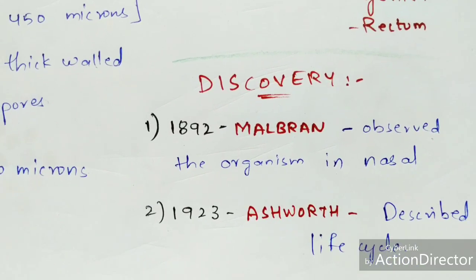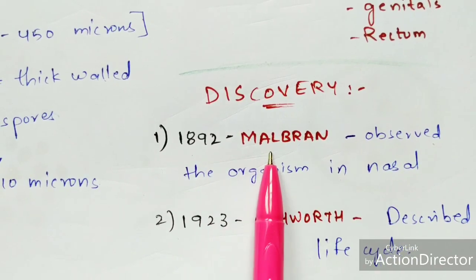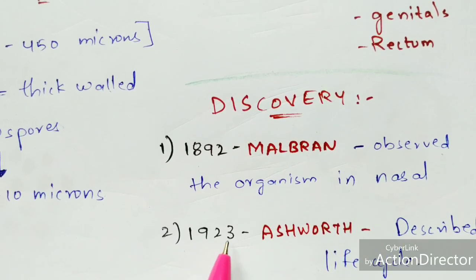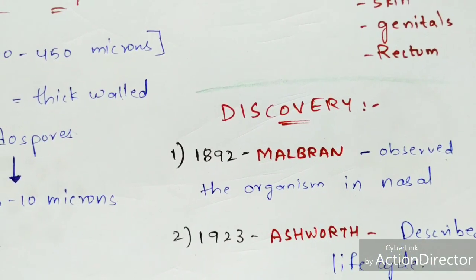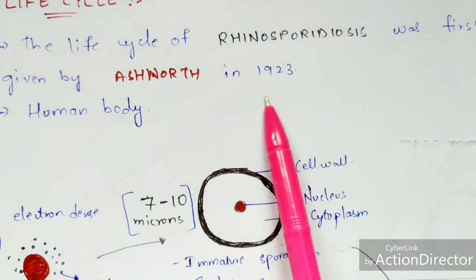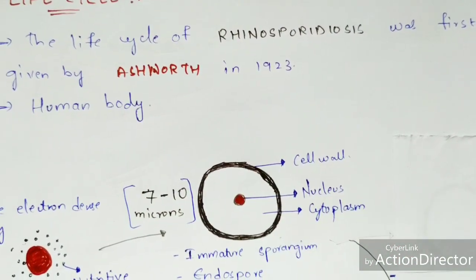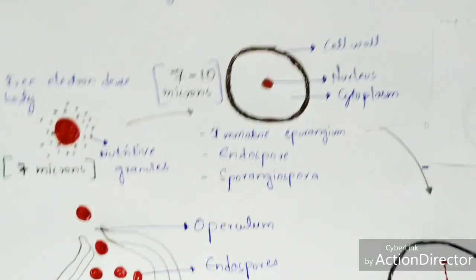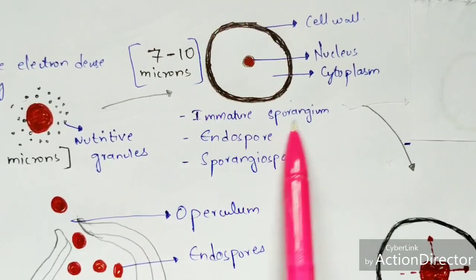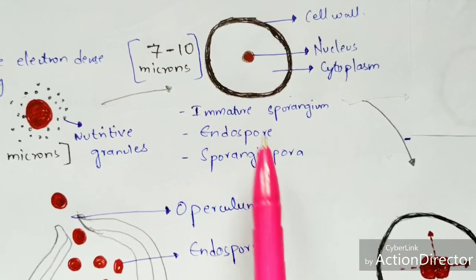Regarding discoveries: in 1892, Malbran is the scientist who first observed the organism in the nasal region. In 1923, Ashworth is the scientist who described the life cycle. The life cycle of rhinosporidiasis was first described by Ashworth in 1923, and it occurs in the human body.